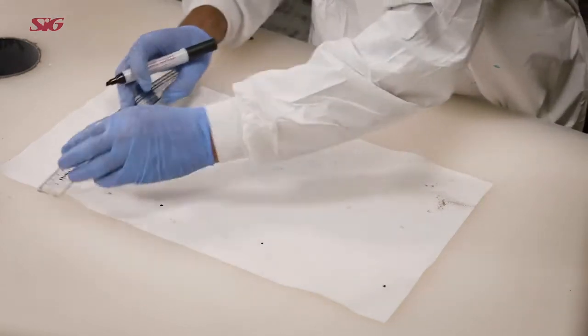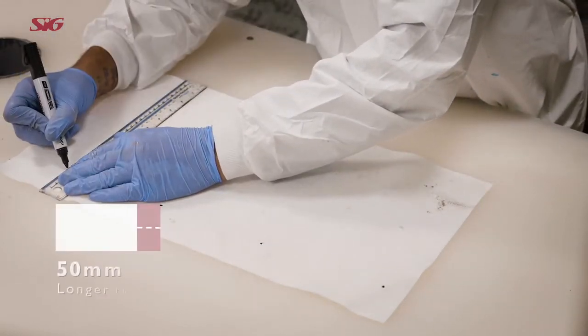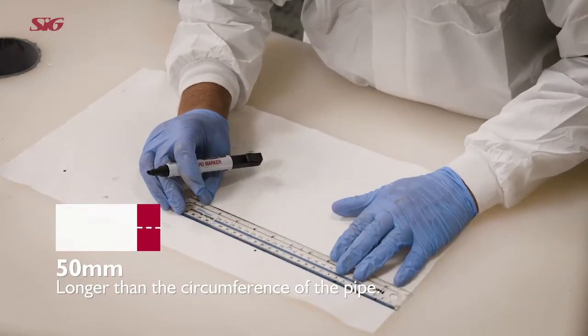The first piece of fabric should have a length that is 50mm longer than the circumference of the pipe, allowing for the overlap.